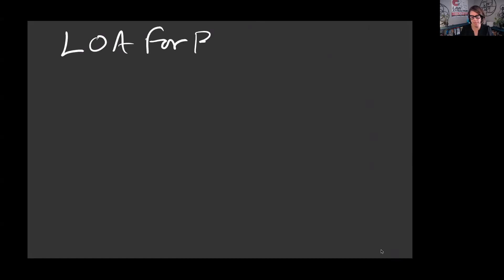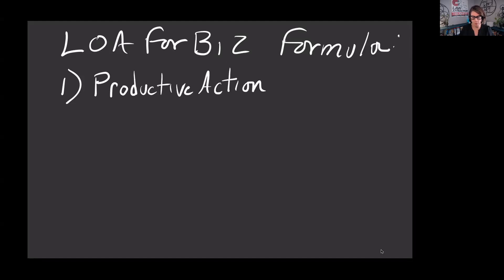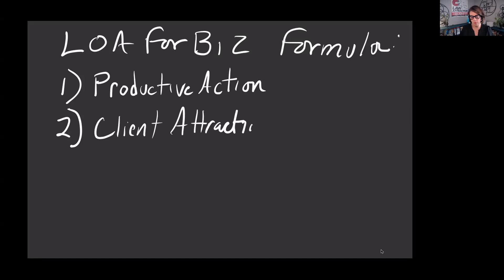Let's break down the law of attraction for business formula — the LOA4Biz formula. It is made up of three components: number one, productive action; number two, client attraction; and number three, money magnetism.